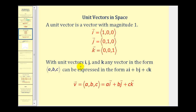With these vectors I, J, and K, we can rewrite any vector as a sum or difference of these unit vectors. For example, if we have the position vector ⟨A, B, C⟩, we can rewrite it as A times vector I, plus B times vector J, plus C times vector K.